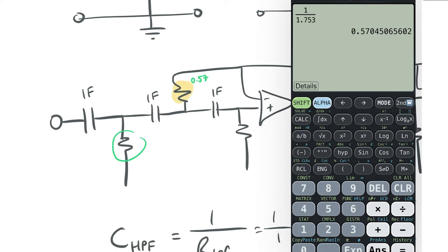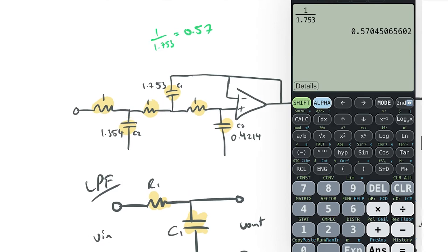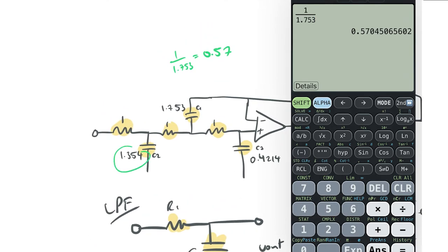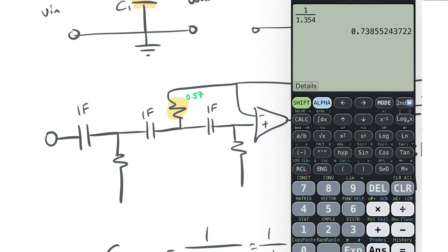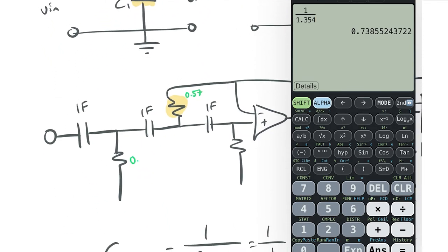Let's do this resistor here now. So we've got 1.354. So 1 over 1.354. And that gives us 0.738. We'll go 0.74. 0.74.